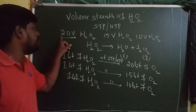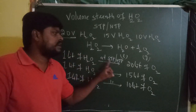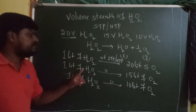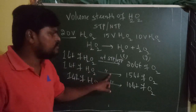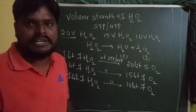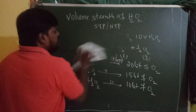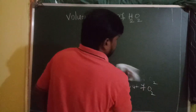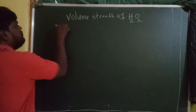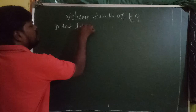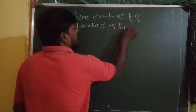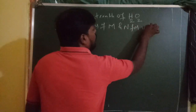Once again: 20V of H₂O₂ means one liter of H₂O₂ at STP or NTP produces 20 liters of O₂. Similarly, 15V of H₂O₂ means one liter at STP or NTP releases 15 liters of oxygen. Based on this concept, let's now discuss the direct formulas for molarity and normality for volume strength of H₂O₂.